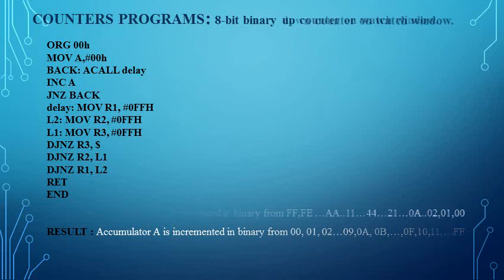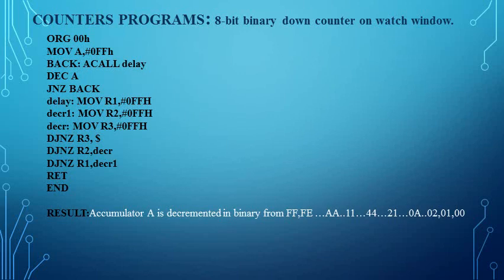The next program is the 8-bit down counter. Similar to how we wrote the code for the up counter, we write the code for the down counter. In the case of an up counter we count from 00h to FFh, but for a down counter we start from the maximum value FFh and count down to 00h.